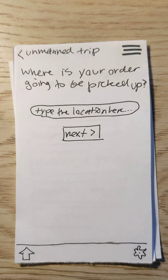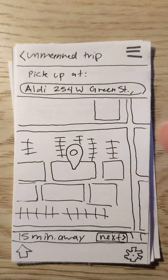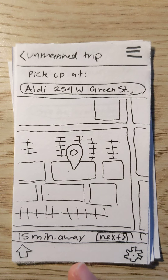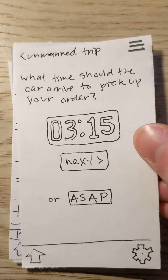It'll ask you where you're picking up the groceries from, so you type in the location and hit next. It'll then pull up a map of where it thinks the location is based on the address and you'll confirm that. It also shows the minutes away it is. This is just a double confirmation to make sure you're going to the right location.